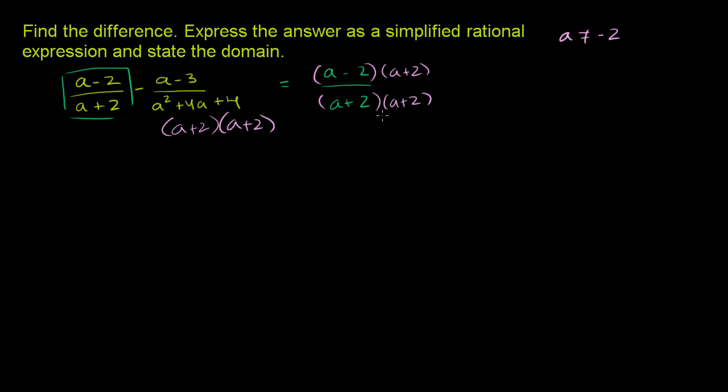And then the second term doesn't change, because this denominator is already the common denominator. So minus a minus 3 over, and we could write it either as a plus 2 times a plus 2. Let's write it in the factored form. It'll make it easier to simplify later on. a plus 2 times a plus 2.